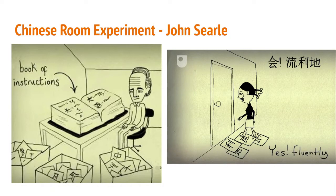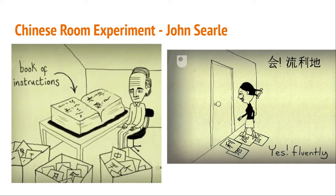Imagine that if this was a huge room, and if that book contained instructions that covered every eventuality — if it had instructions for telling jokes, solving problems, even falling in love and having a friendship — then whatever conversation the person outside wanted to have, I would be able to find the right symbols, good enough to convince them that I understood what they were saying. But I still wouldn't actually know how to speak Chinese, because all I'm doing is moving symbols around. I don't even know what the symbols mean.